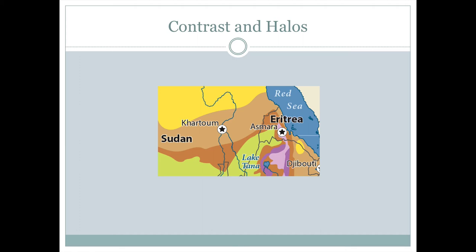When we put text or labels on a map, we want those text or labels to really stand out from the map so that it's easy for people to read them, even if there's a lot of variations in patterns or colors on our map, as we see in this map here. One way that we can do that is by putting a little white border or halo around the text, which simply helps with the legibility and makes it easier for the reader to read the text.